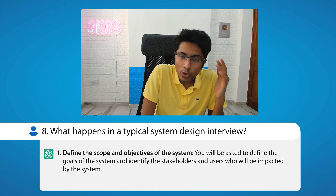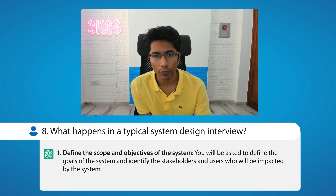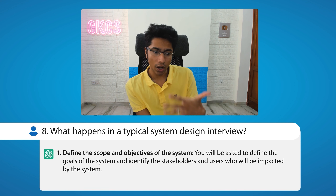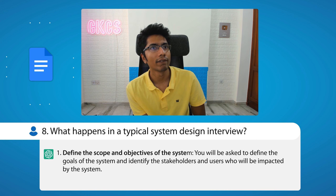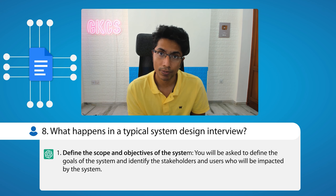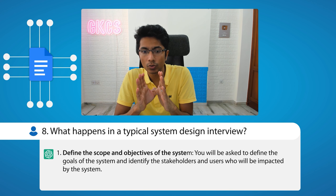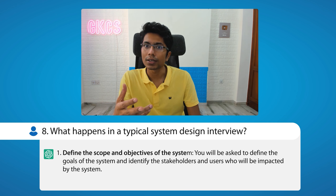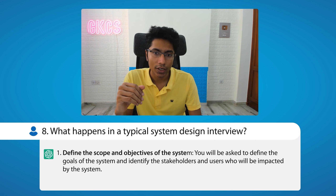During the interview you may be asked to define the scope and objective of the system. This is a pretty important part where you look at requirements from a user perspective and think about how those can be translated into engineering terms. For example, with Google Docs, where hundreds of people are writing on the same document, the engineering problem is building a collaborative system with multiple requests from different parts of the world where the document has to be consistent to all users simultaneously.